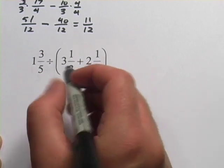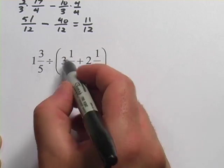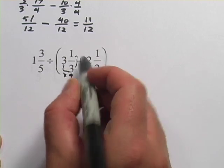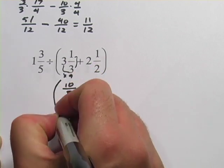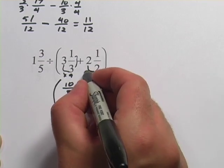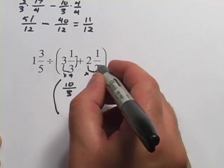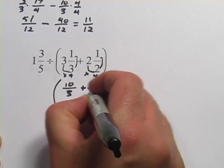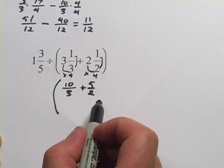And again, I have to convert them to improper fractions first. So 3 times 3 is 9. 9 plus 1 is 10. So that's 10 thirds. Remember, this is all inside our parentheses. Do the same thing over here. 2 times 2 is 4. 4 plus 1 is 5. So that's 5 halves.